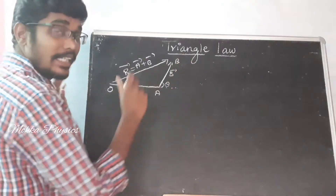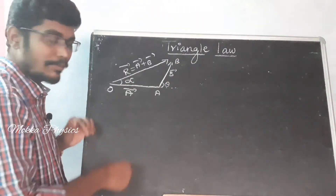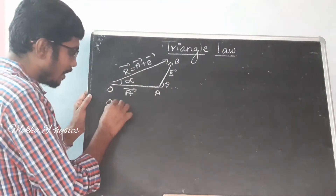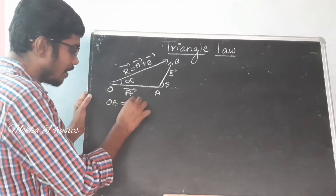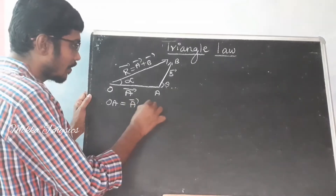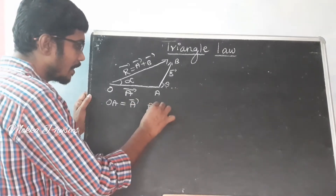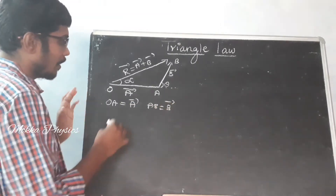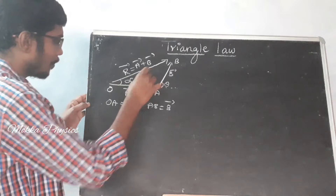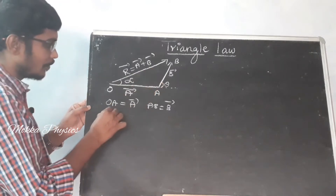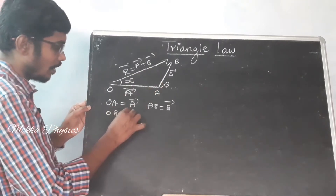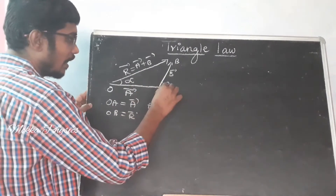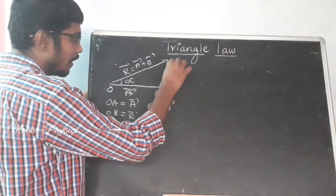Now let's write this statement. What is OA vector? It is the A vector. AB vector is the B vector. Now if you want to solve it, OB is the R vector. If you want to solve it, you can extend this line and draw a perpendicular from B to the extended line, calling the foot of the perpendicular N.